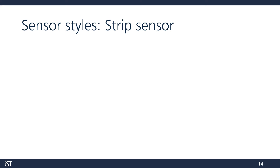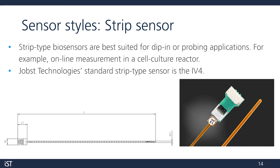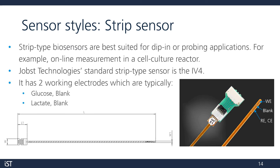YOLPS and IST have two popular standard sensor styles. First up, we have the IV-4 dip-in sensor strip. These are suitable for dip-in or probing applications. One example where these might be used is during online measurement of cell culture media from a bioreactor. The two standard electrode arrangements are typically glucose and blank, or lactate and blank. The blank electrode has no enzyme immobilized near it — it's there to provide a reference measurement without the chemical reaction, helping to cancel out any noise or offset from our measurement.